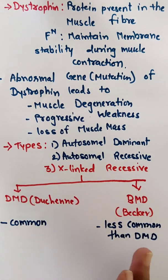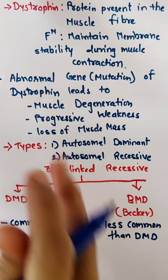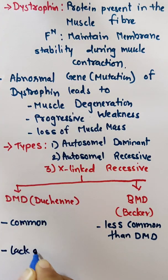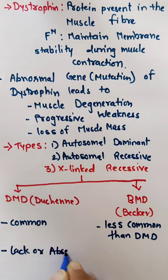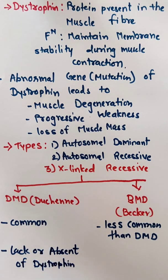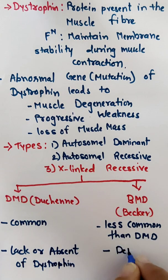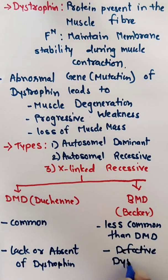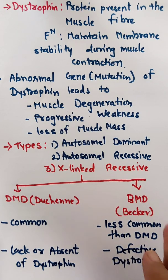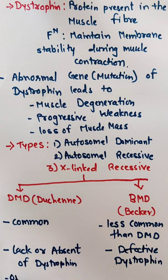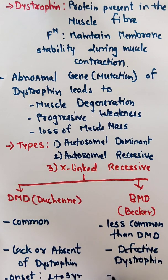In DMD, the dystrophin protein is absent. Whereas in BMD, the dystrophin is defective or depleted but still present. The onset of DMD is at 2 to 3 years, whereas the onset of BMD is between 5 to 15 years.